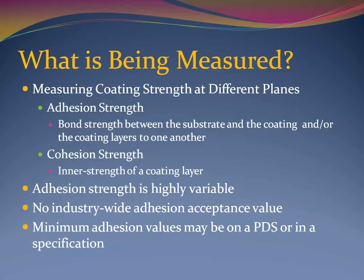We will illustrate each of these in more detail later. The adhesion of a coating system to a surface is highly variable and can be influenced by a multitude of factors, way too numerous to itemize during this webinar. That is probably why there is no industry-wide standard requiring a certain generic type of coating to have a minimum adhesion or cohesion strength. However, project specifications may require a minimum adhesion value as a contract requirement, and coating manufacturers will often report an adhesion value on their product data sheets, which is sometimes adopted into a project specification.